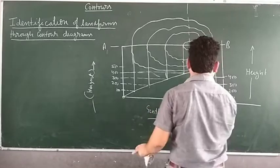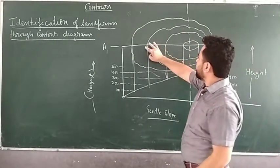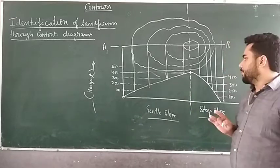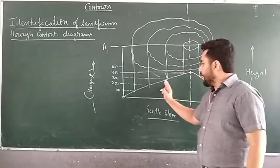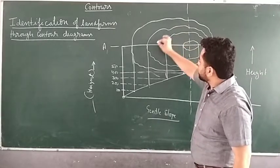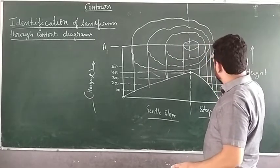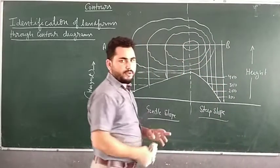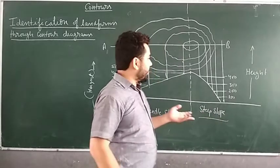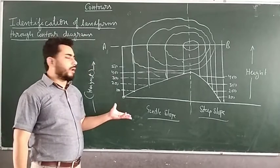This is a conical hill — this round circular line is a conical hill, which is having gentle slope on this side and steep slope on this side. By one diagram we have understood three landforms: the entire shape as a whole is a conical hill; this slope is gentle slope with contour lines far apart; this slope is steep slope with contour lines very close to each other. This is how we draw contour lines for landforms.